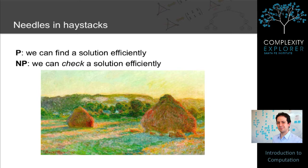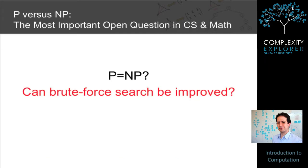The analogy here is to a needle in a haystack. If I show you a piece of hay or a needle, it's very easy for you to check: is this a piece of hay or is this a needle? Therefore there is a brute force algorithm for finding a needle in a haystack — namely, go through each item in the haystack and check, is this a needle? So the P versus NP problem is essentially the question of: can brute force search algorithms always be improved?